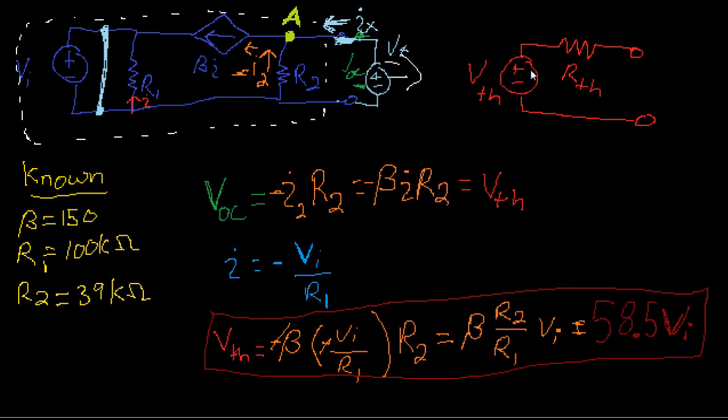Welcome back to the second part of this video on Norton and Thevenin equivalent circuits. We left off where we defined our VTH in terms of VI, and we're trying to find our equivalent resistance RTH.